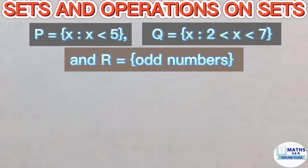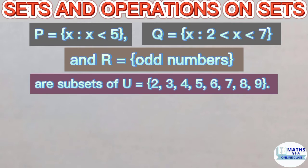and then the set R is a set of odd numbers. The sets P, Q, and R are subsets of the universal set with elements 2, 3, 4, 5, 6, 7, 8, and 9.